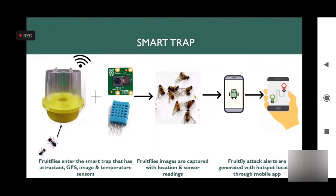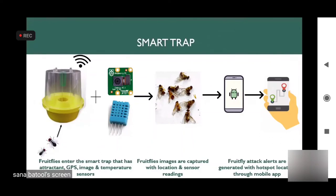The application identifies hotspots where fruit flies are actually present. Without this system, if the farmer doesn't know where fruit flies are in the orchard, he sprays pesticide all over it. But with our trap, the farmer only sprays in the areas where hotspots are identified, so excessive use of pesticide is avoided.